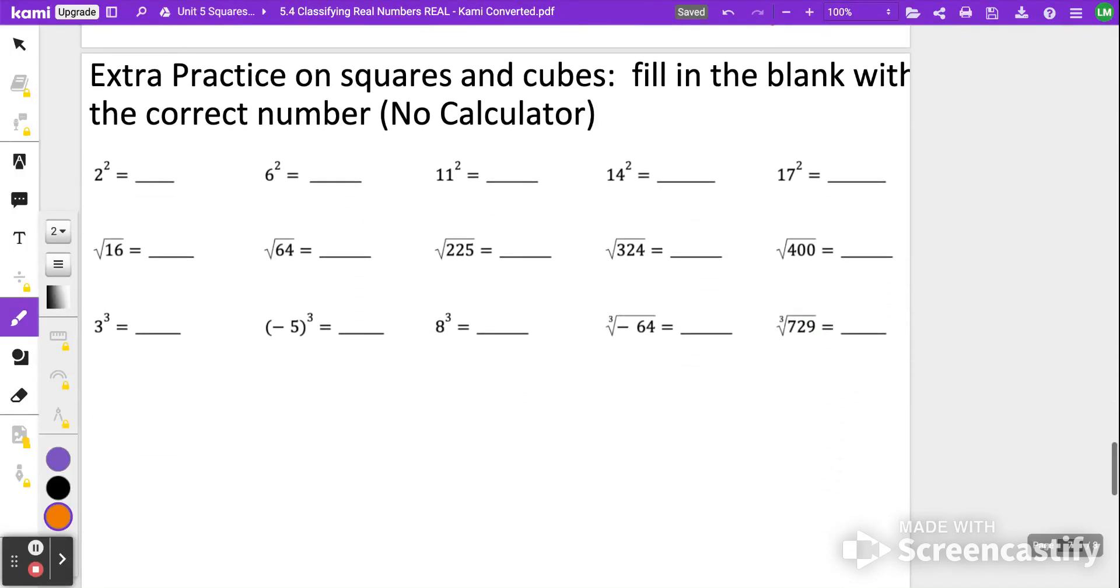What we're going to do here is just practice a little bit more with squares and cubes. So let's go ahead and pause here, try to remember what you can, and when you're ready to check, click play. I know we just did 14 squared, that's 196. We've got 17 squared next to it, so we'll go and do that one, 289. And then just going backwards, 11 squared is 121, 6 squared is 36, 2 squared is 4. The square root of 16 is 4, the square root of 64 is 8. The square root of 225, that's going to be 15. The square root of 324 is going to be 18. And the square root of 400 is 20.